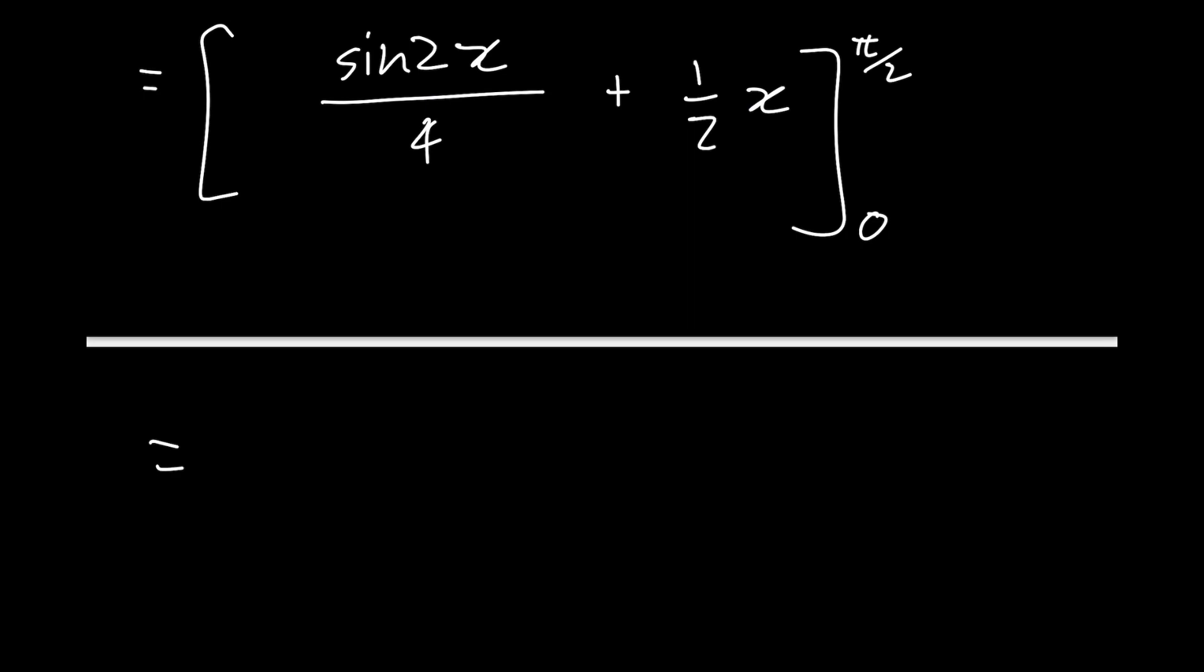So now substituting in our limit of integration, we get pi by 2 going in here. And we get sine of 2 times by pi by 2, which is sine of pi. And sine of pi is the same as sine of 180 degrees, which is 0. So 0 divided by 4 is 0. And then plus pi by 2 times 1 over 2, which is going to be pi by 4.